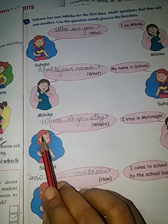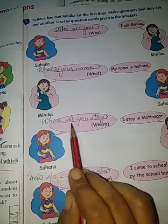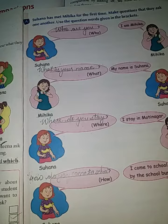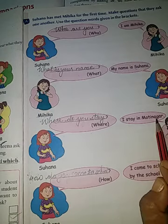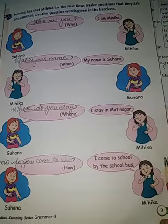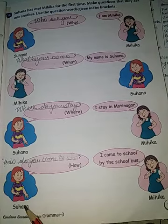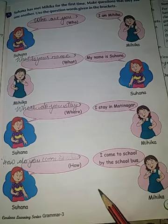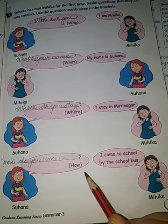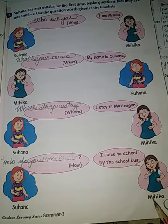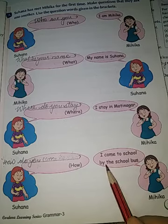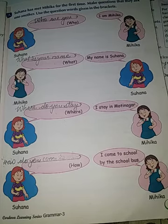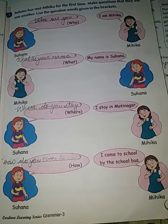Suhana asks Mihika, 'Where do you stay?' using 'where.' Mihika answers, 'I stay in Muti Nagar.' Suhana then asks, 'How do you come to school?' using 'how.' Mihika answers, 'I come to school by the school bus.' We have completed this exercise. Let's move to the next page.